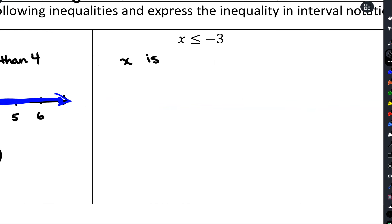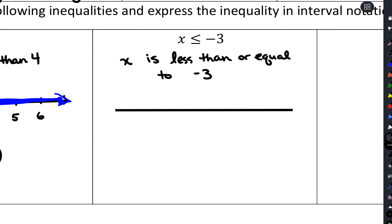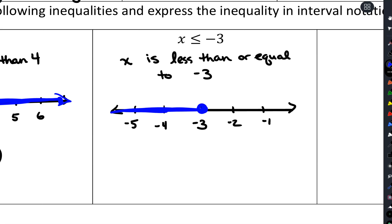For x is less than or equal to negative 3: I'll draw the number line with negative 3 and two values on each side. Because we have equals we use a solid circle, and because it's less than we go to the left. The interval goes from negative infinity — parentheses — up to negative 3 with a square bracket.